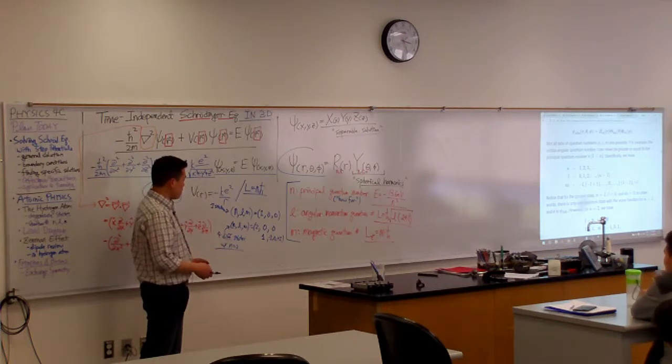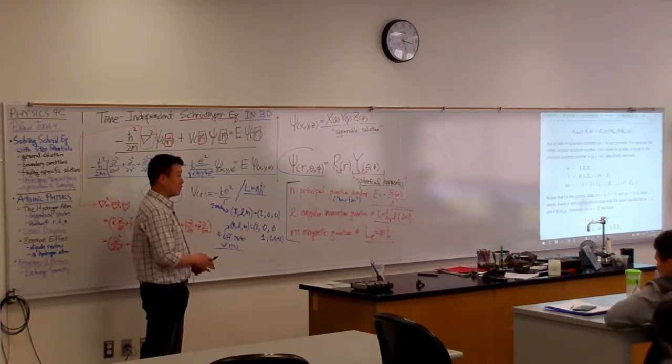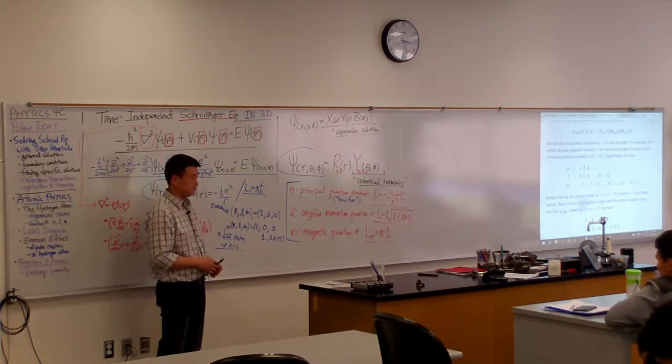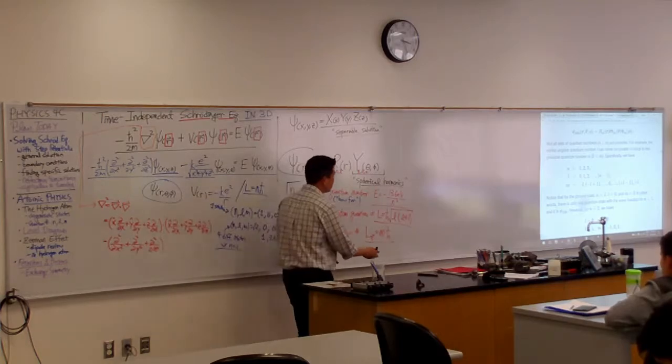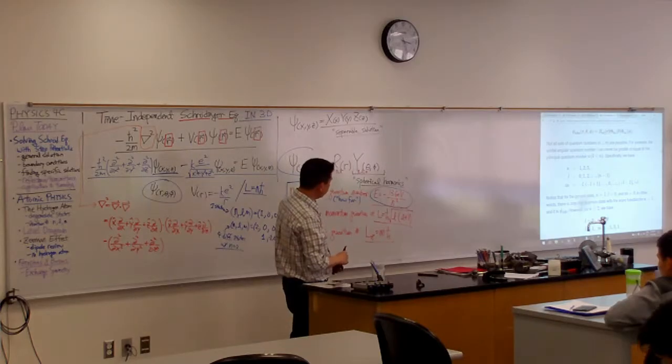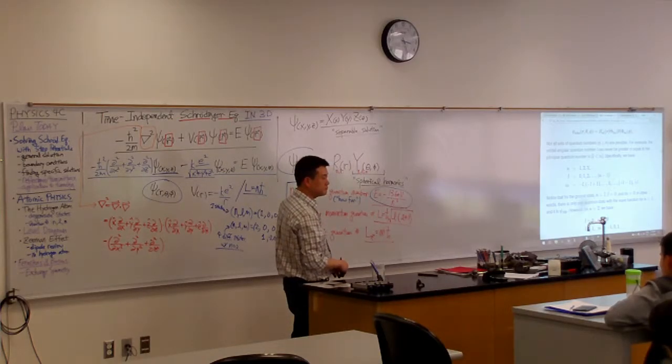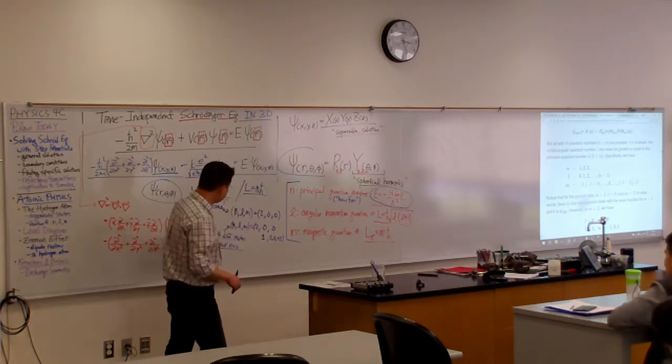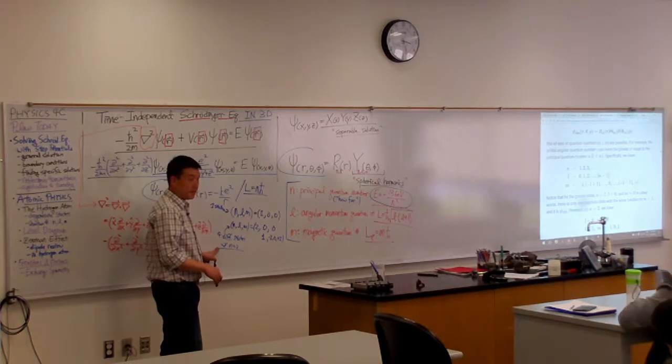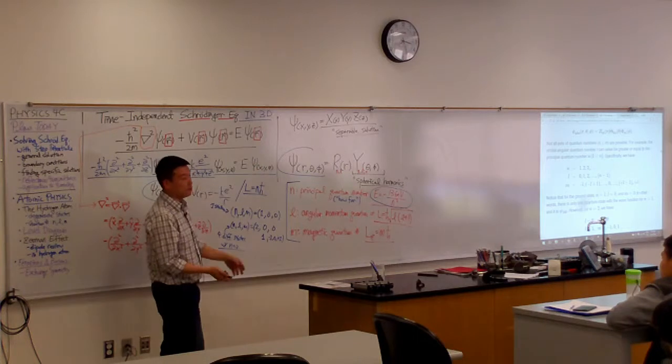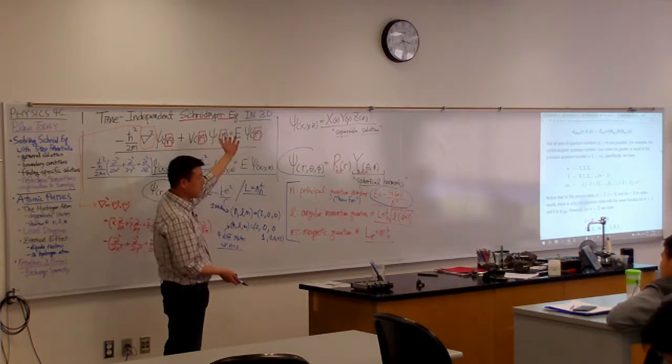What do you think is the energy of the electron in this N equals two state? You're looking at this formula here, right? Does it seem to depend on L or M? What that means is these four different states, they all have the same energy. They all have that value of energy, minus 13.6 divided by two squared.